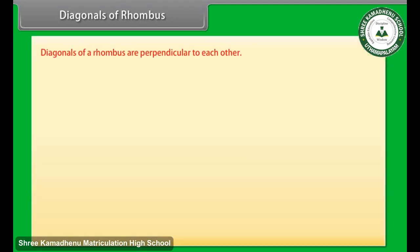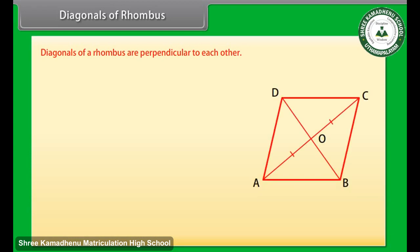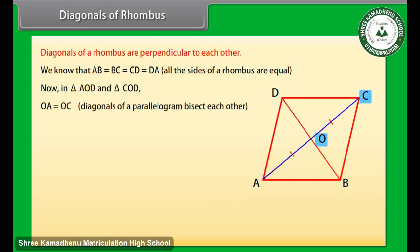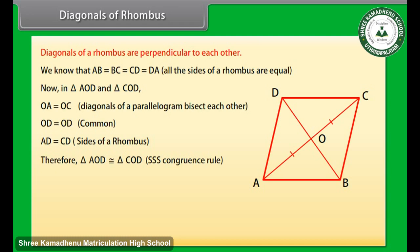Diagonals of a rhombus. Let us now prove that the diagonals of a rhombus are perpendicular to each other. Consider the rhombus ABCD. We know that AB is equal to BC is equal to CD is equal to DA because all sides of a rhombus are equal. In triangle AOD and triangle COD, OA is equal to OC because the diagonals of a parallelogram bisect each other. OD is equal to OD — common. AD is equal to CD — sides of a rhombus. Therefore by SSS congruence rule, triangle AOD is congruent to triangle COD. This gives angle AOD is equal to angle COD — CPCT.